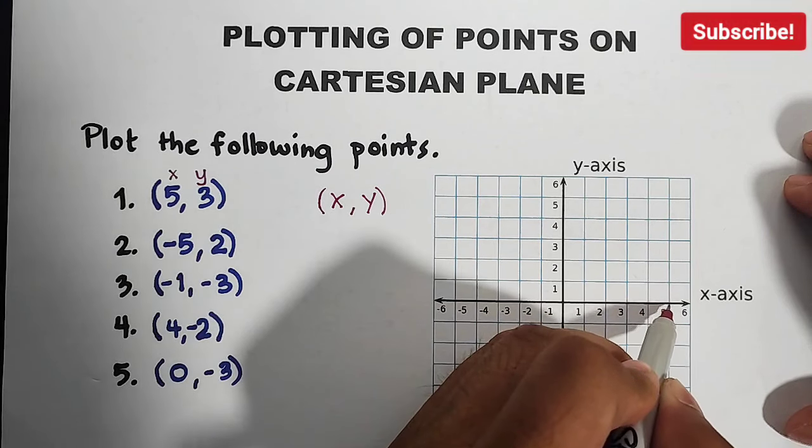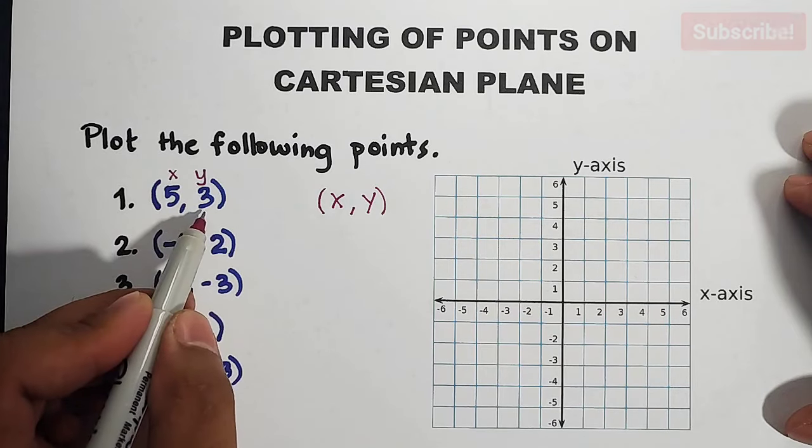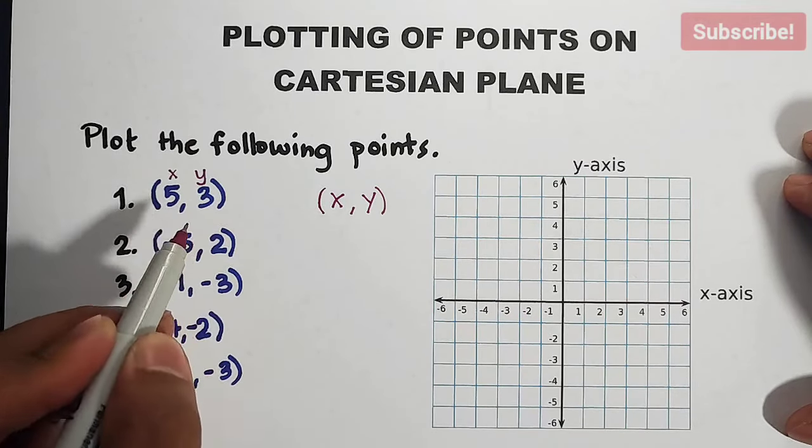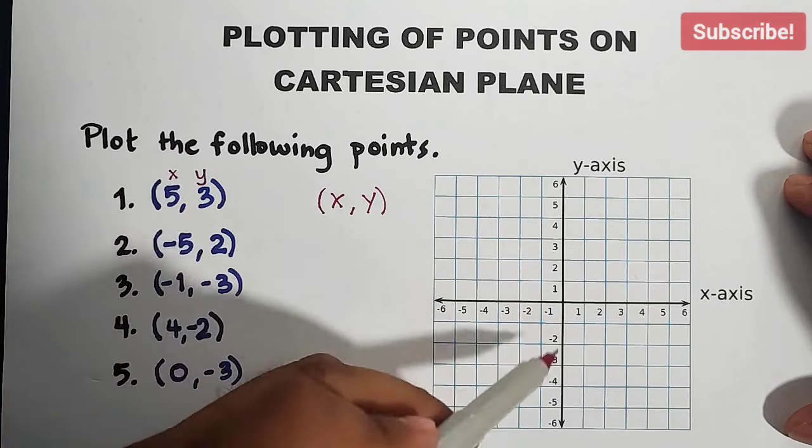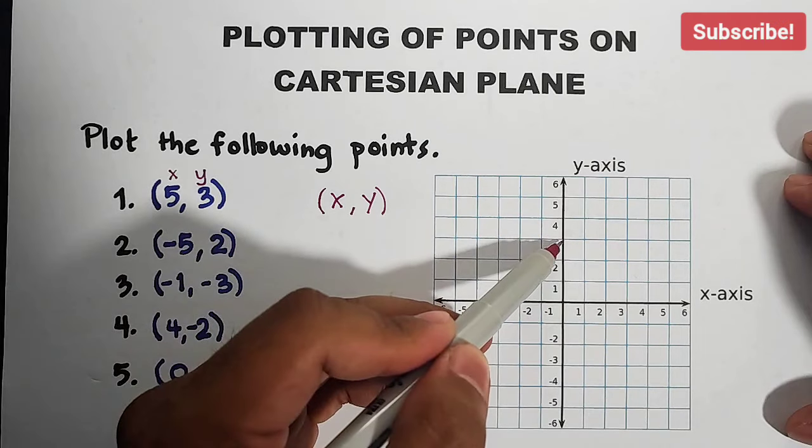Okay? Next is this line, this number is our y which is equal to 3. If your y is equal to 3 or positive 3, you will go through the y-axis and find positive 3. This is it.